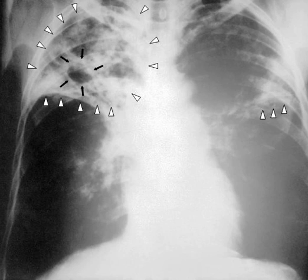People with prolonged, frequent, or close contact with people with TB are at particularly high risk of becoming infected, with an estimated 22% infection rate. A person with active but untreated tuberculosis may infect 10–15 other people per year. Transmission should occur from only people with active TB; those with latent infection are not thought to be contagious. The probability of transmission from one person to another depends upon several factors, including the number of infectious droplets expelled by the carrier, the effectiveness of ventilation, the duration of exposure, the virulence of the M. tuberculosis strain, and the level of immunity in the uninfected person.